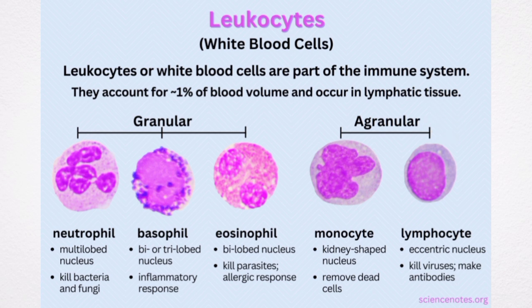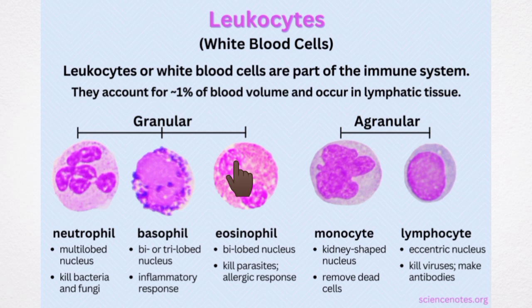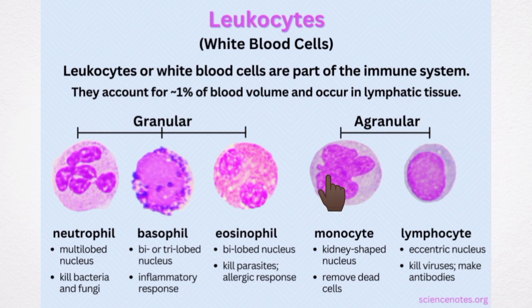Depending on the staining property of granules, the granulocytes are classified into three types. Number one is the neutrophils, with granules taking both acidic and basic stains. Number two are the eosinophils, with granules taking acidic stains. Number three are basophils, with granules taking basic stains. The agranulocytes have plain cytoplasm without granules and are of two types: monocytes and lymphocytes.